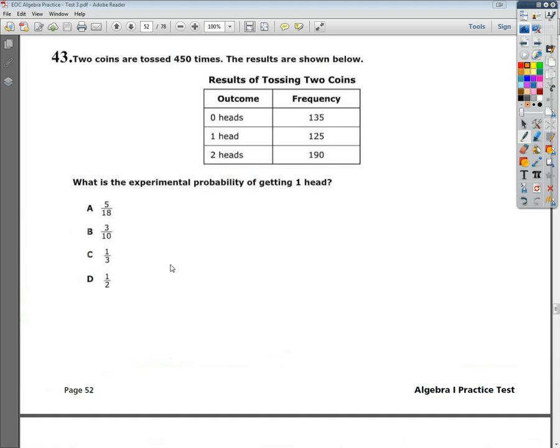Welcome. This is the Tennessee end of course Algebra 1 practice test number 3, question 42. This is an experimental probability question.